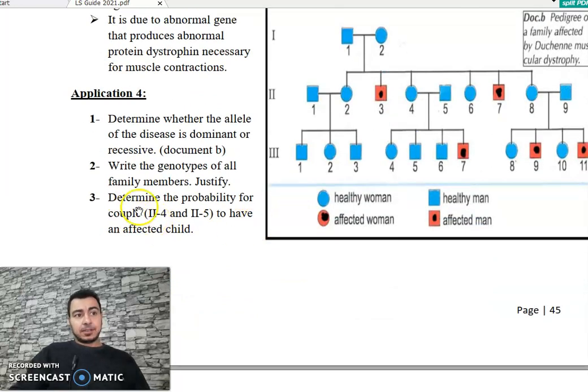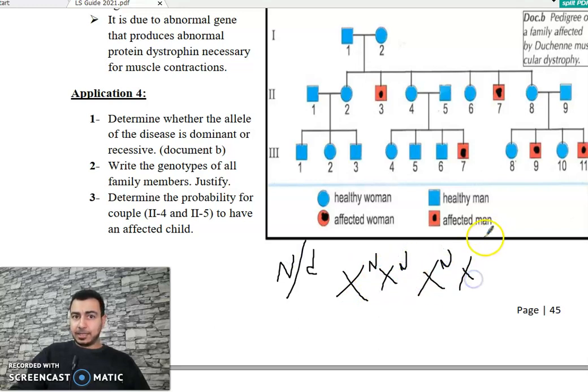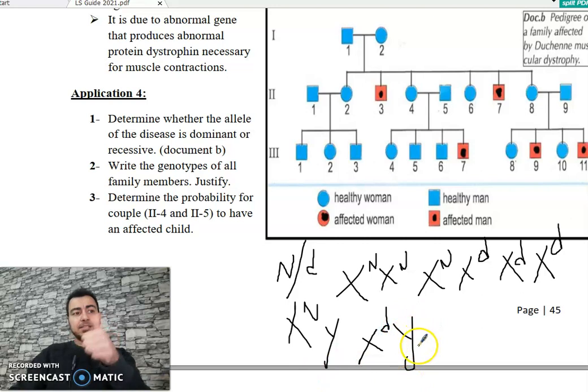The question is, determine the probability for couple 2, 4 and 2, 5 to have an affected child. I'm going to take D for the disease and N for the normal allele. The individual could be XN XN in female, normal; XN XD, normal but carrier; XD XD affected with the disease, which is recessive. However, in male, he could be XN Y, normal, or XD Y, affected. The male has two possibilities, the female has three possibilities.